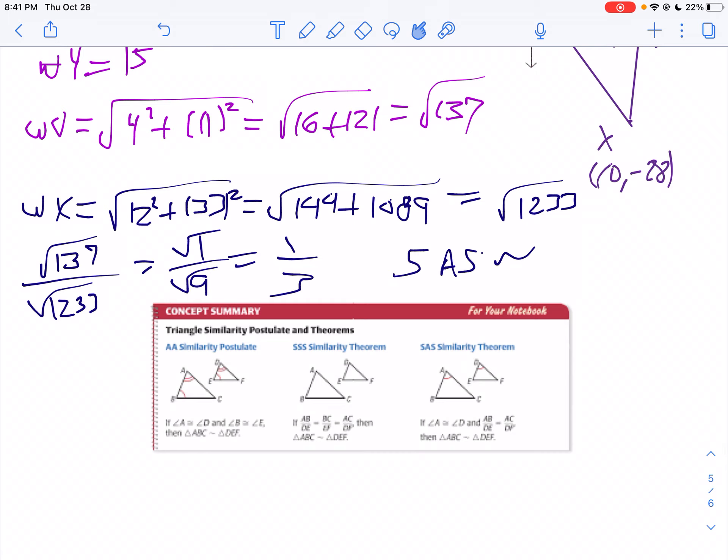So in summary, we have three ways of showing triangles similar. In our previous lesson, we did angle angle. And today we did side side side similarity and side angle side similarity. And remember, when you write side, side, side similarity, write it as side, side, side tilde. And the same thing with the side angle side similarity.